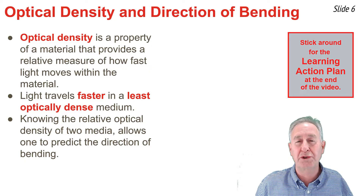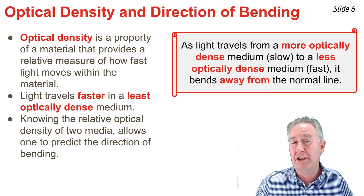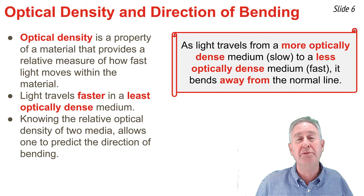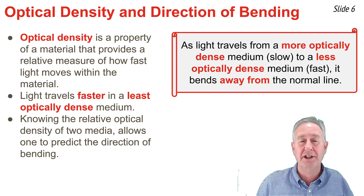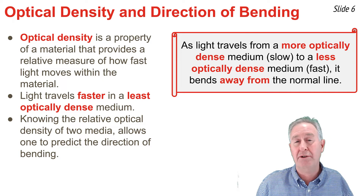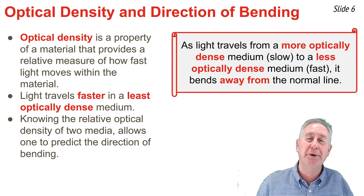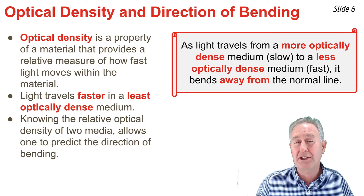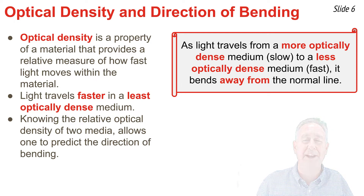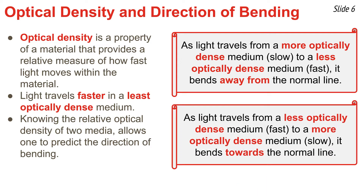If we know the relative optical density of the two materials on opposite sides of the boundary, we can predict the direction that light will bend. Let's develop two rules. In the first rule, light is traveling in the more optically dense material into the material which is least optically dense — this is equivalent to traveling from slower to faster, and the bending occurs away from the normal line. In our second rule, light is traveling from the less optically dense material into the more optically dense material — equivalent to fast to slow — and the light will bend towards the normal line.